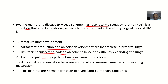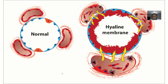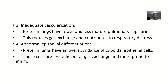The second reason is disrupted pulmonary epithelial-mesenchymal interactions. Abnormal communication between the epithelial and mesenchymal cells will impair lung maturation. This disrupts the normal formation of alveoli and pulmonary capillaries.